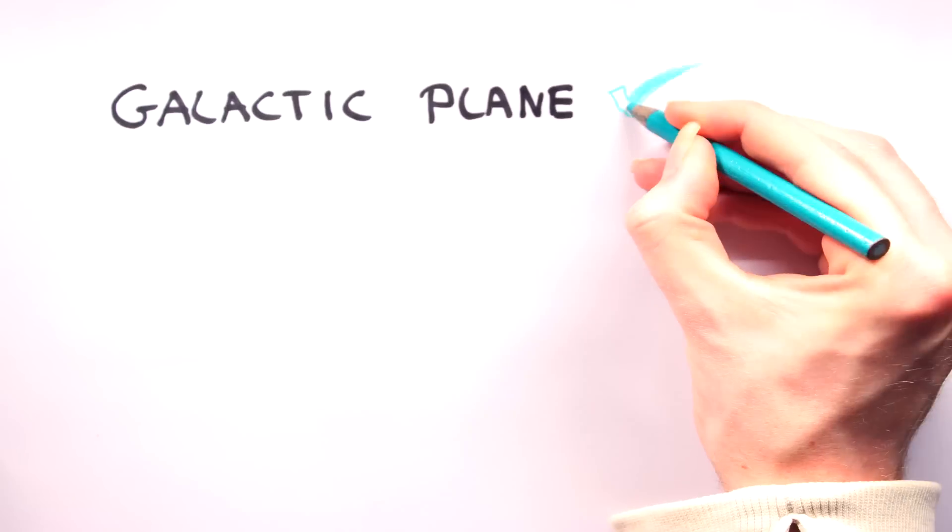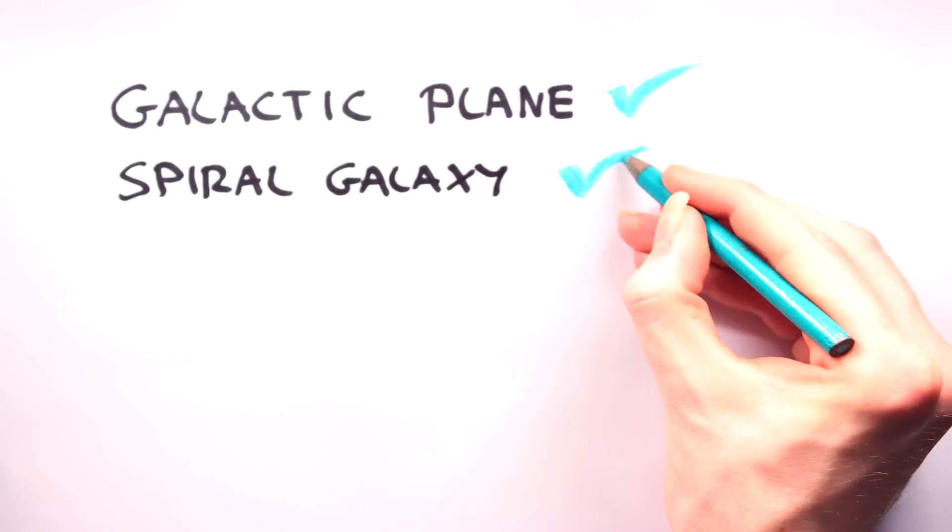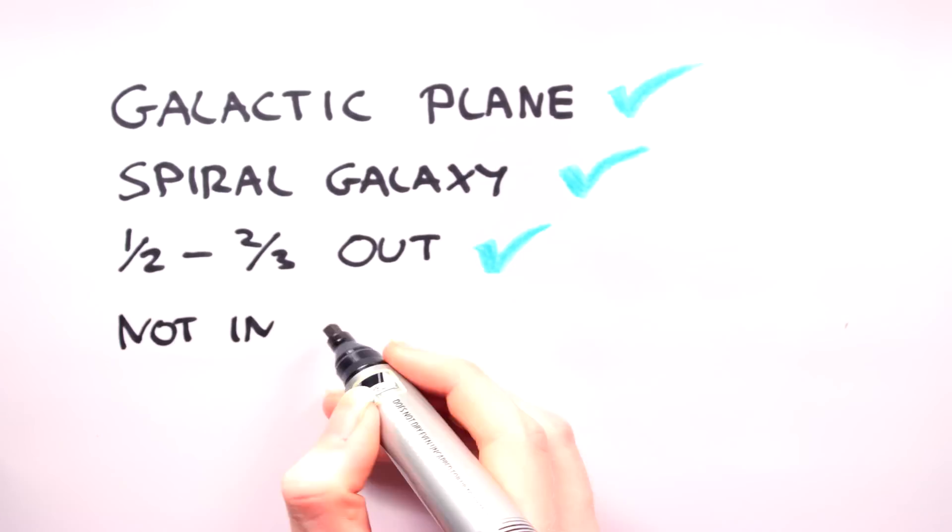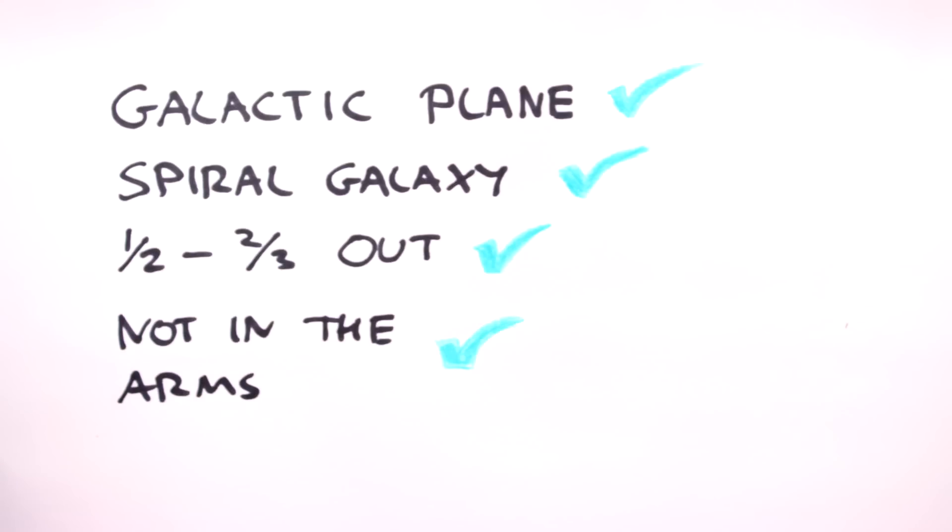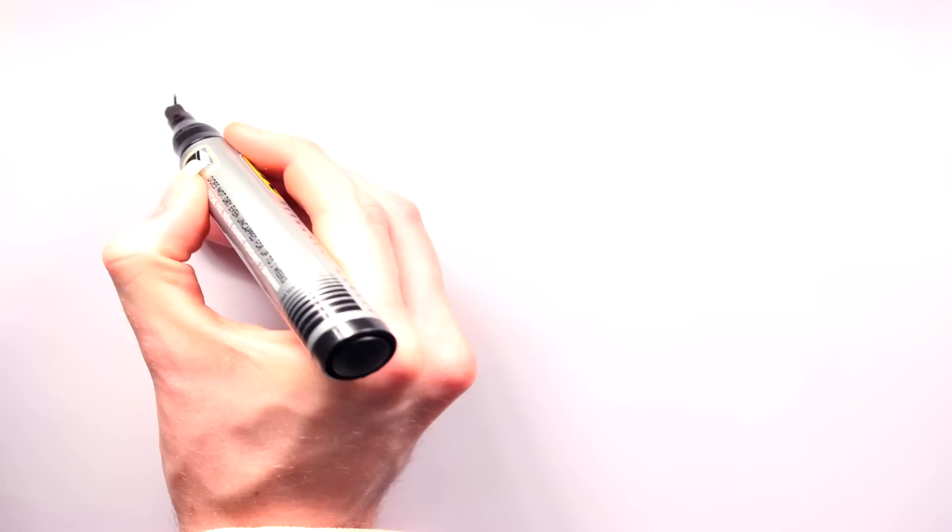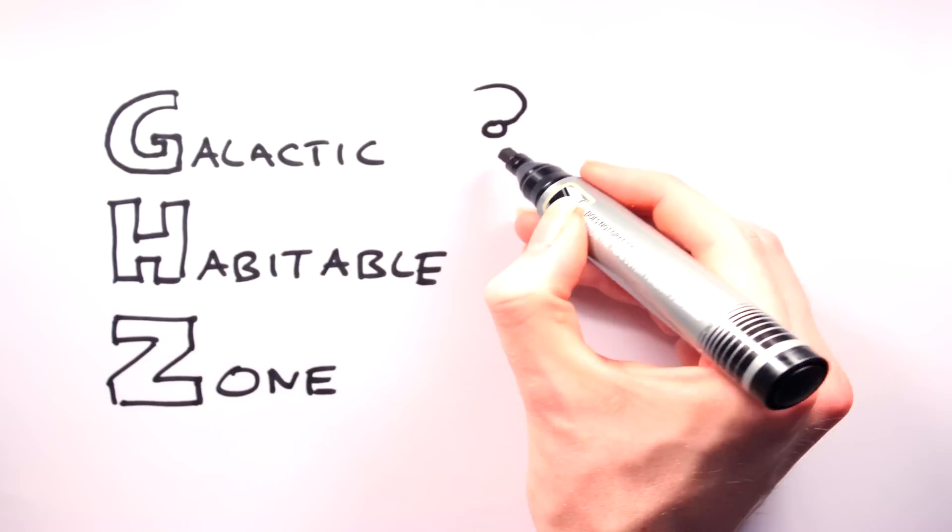In a nutshell, the best place for your fictional star system to be will be in the galactic plane of a spiral galaxy, about a half to two-thirds of the way out from the center and not in any of the spiral arms. This area is known as the galactic habitable zone.